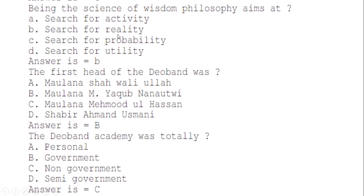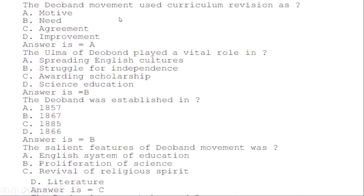The first head of Deoband was: correct option B — Maulana Mohammad Yaqub Nanautvi. The Deoband Academy was totally: correct option C — non-government. The Deoband movement used curriculum revision as: correct option A — a motive. The Ulama of Deoband played a vital role in: correct option B — struggling for independence.